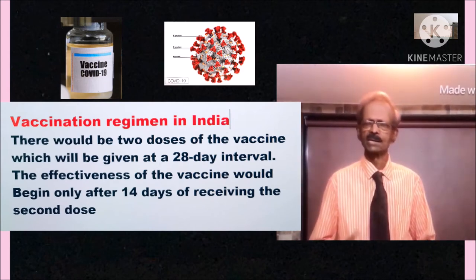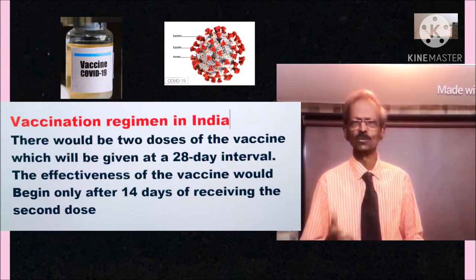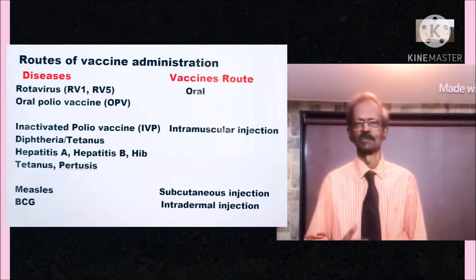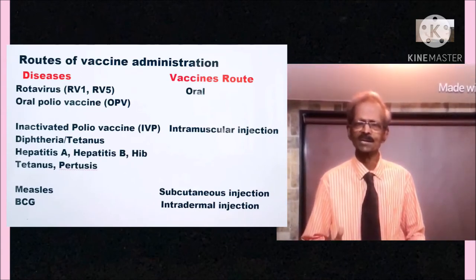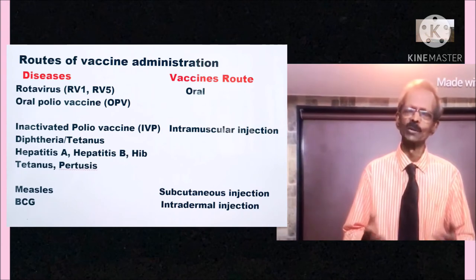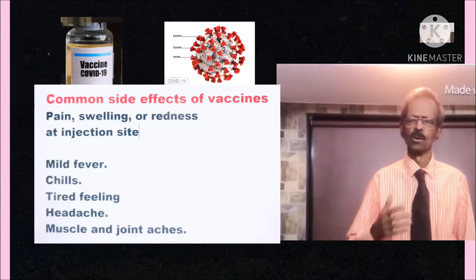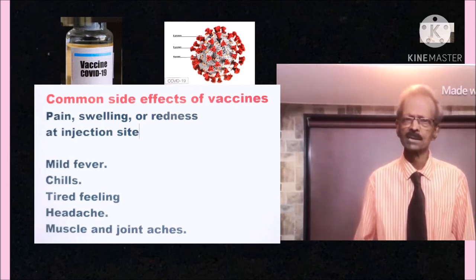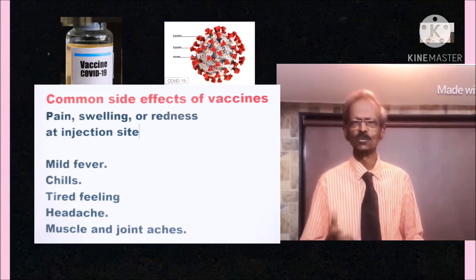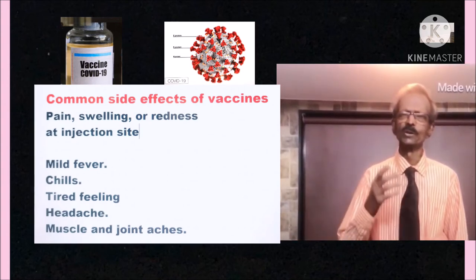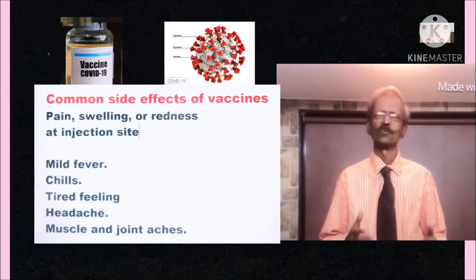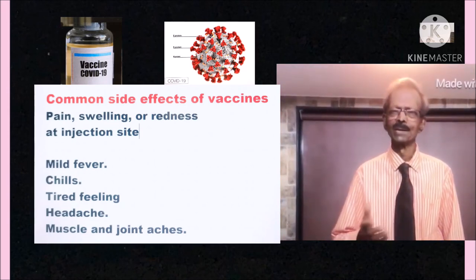This table indicates the routes of vaccine administration for some common vaccines. Common side effects of vaccines include pain, swelling or redness at the injection site, mild fever, chills, tired feeling, headache, and muscle and joint aches.